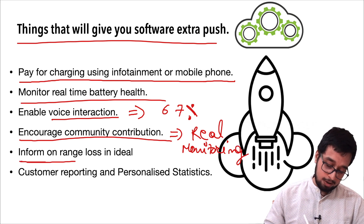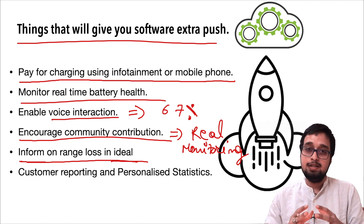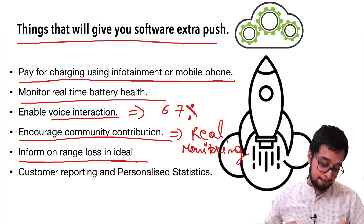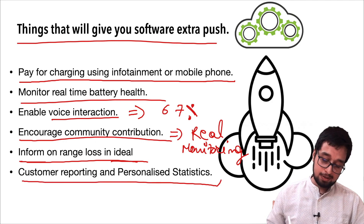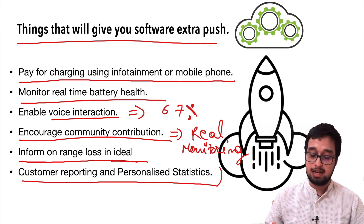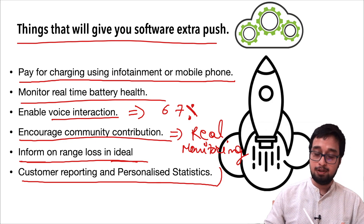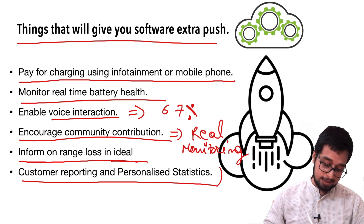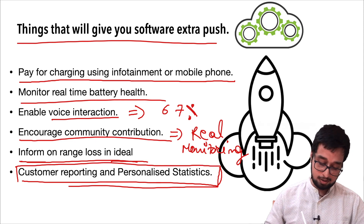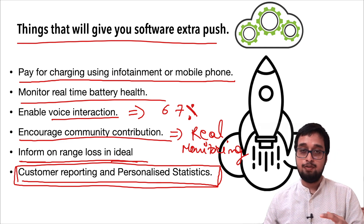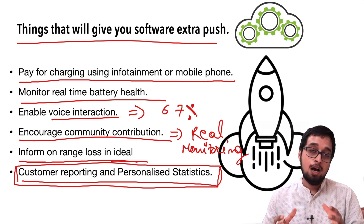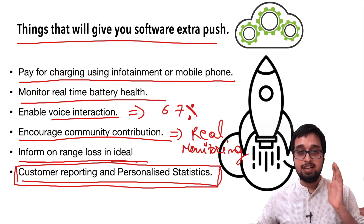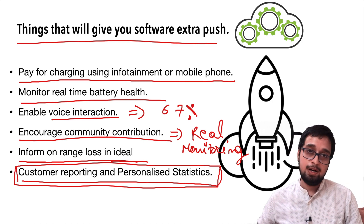Fifth is informing on the range loss while idle, which will basically give customers confidence that your software is helping them plan their route in a better way. The last one is customer reports and personalized statistics — a lot of EV trip planners lack in this area and don't consider customer feedback or personal statistics. If your software has these things, it will give it an extra edge in the market. I hope you enjoyed this video — feel free to comment suggestions or feedback below. Till then, peace.